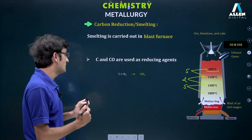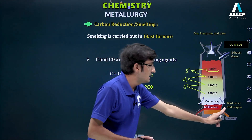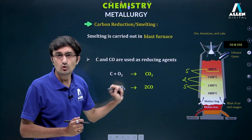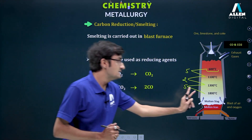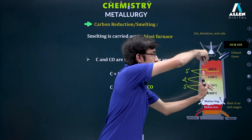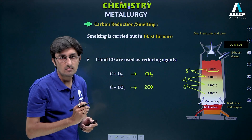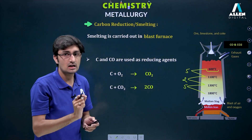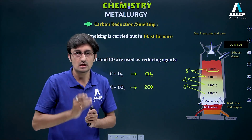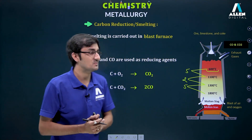The reaction proceeds as follows: coke falls from the top while oxygen is blown from the bottom, so coke and oxygen mix to form CO₂. This CO₂ moves upward and meets coke falling from above, so coke and CO₂ mix to form CO — carbon monoxide. Throughout the entire blast furnace, the reducing agents are C and CO. Let's now understand the mechanism with the help of an animation.